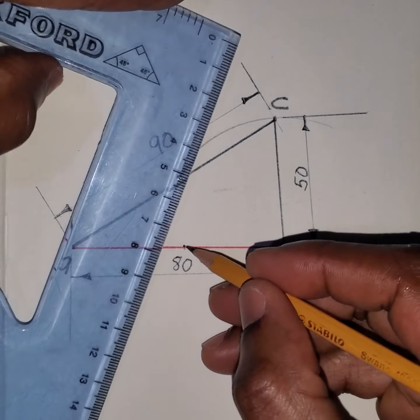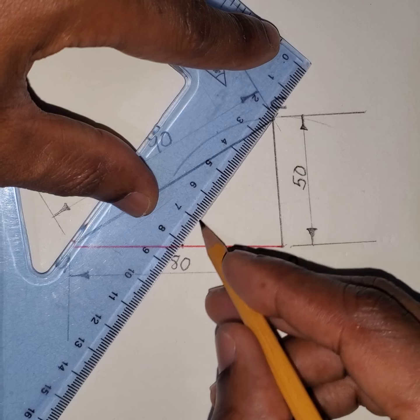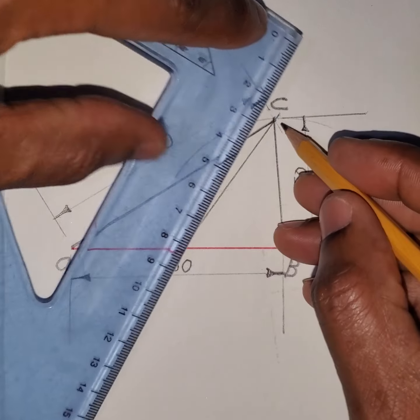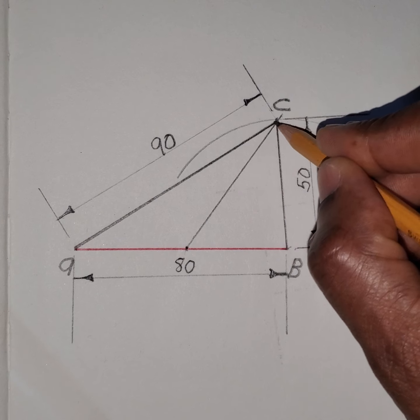So we're going to draw a line from here to the adjacent angle which is there.